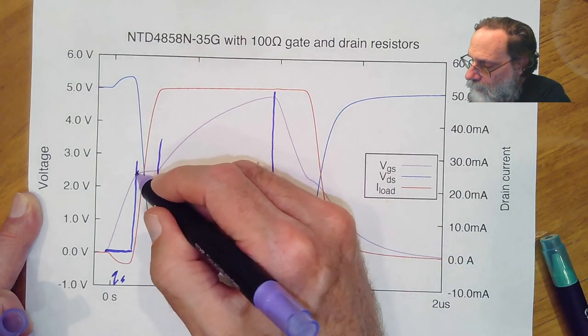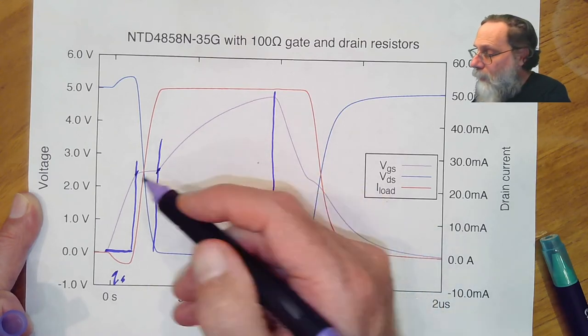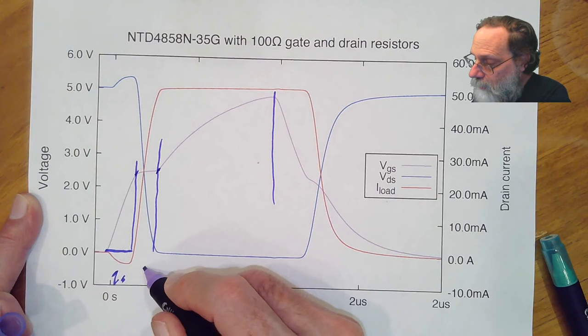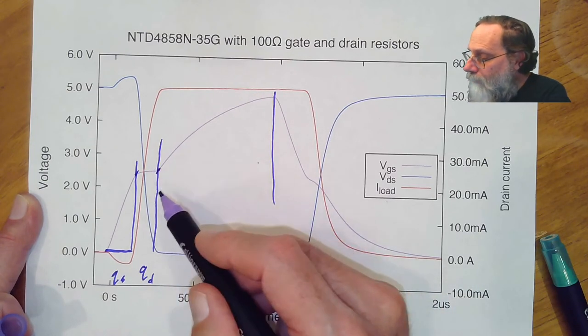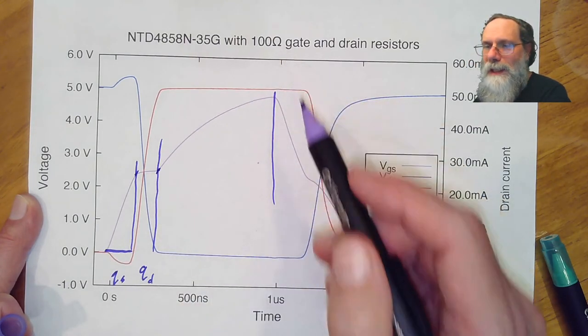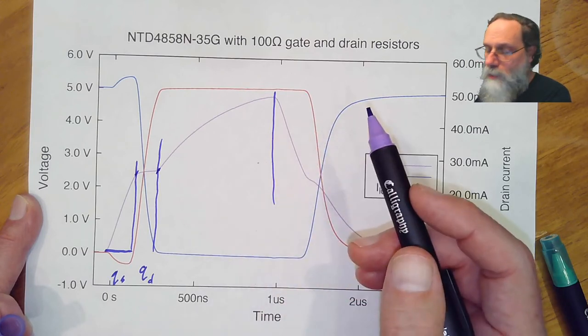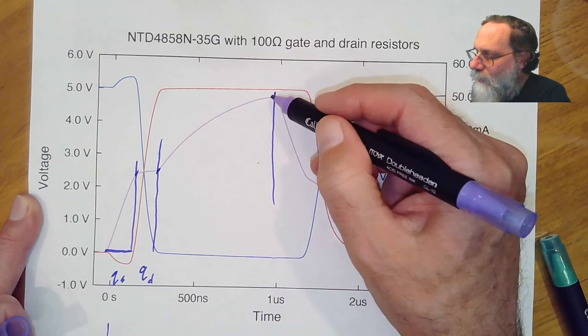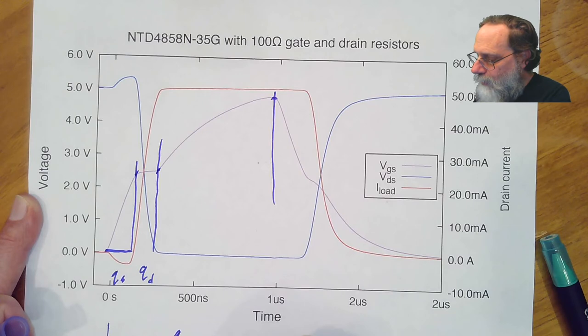And the amount of charge there is known as the source charge. And then from here to here, we're basically waiting for the drain to make its full transition. The charge there is roughly constant, it's called the drain charge. And then the final charge here depends on what voltage we're taking the output up to. So it's not a constant, but for any given sort of target voltage up here is roughly constant. And that is the total charge.